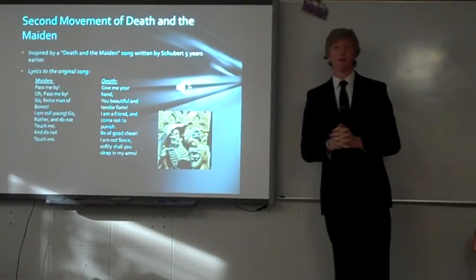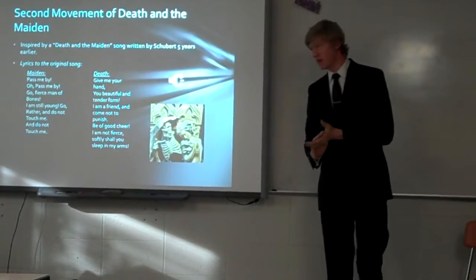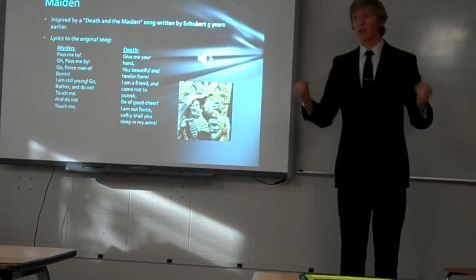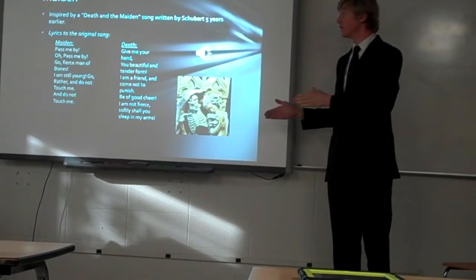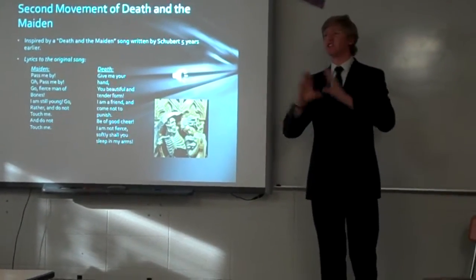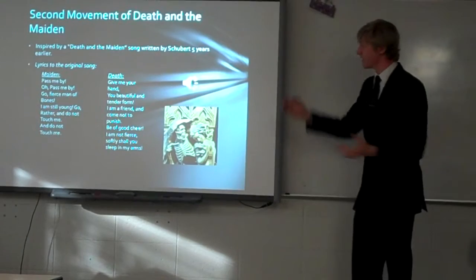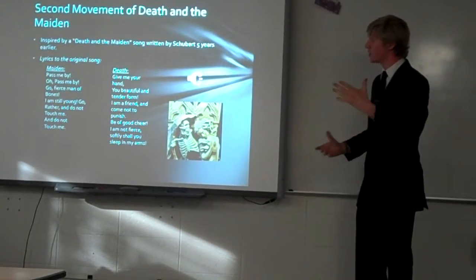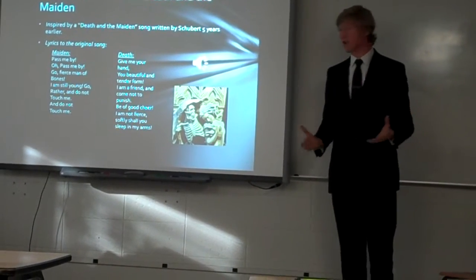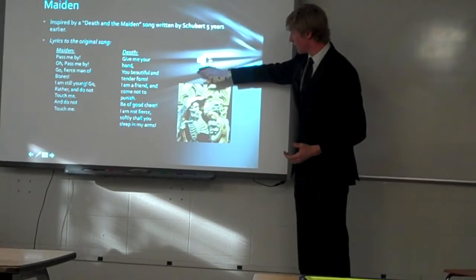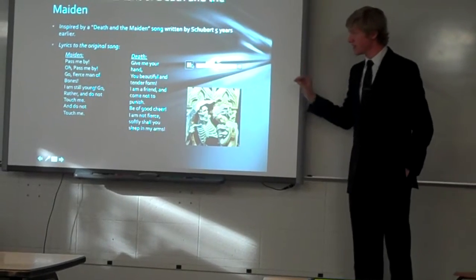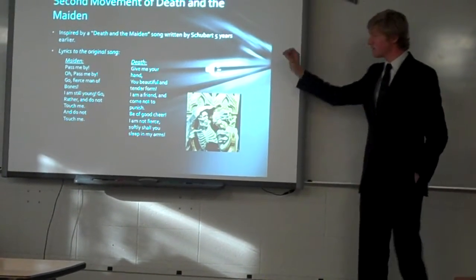The next music is the second movement of Death and the Maiden, occurring 37 pages later. But first, Death and the Maiden the quartet was inspired by a song written by Schubert five years earlier. This song talks about a maiden who's begging Death to pass her by because she's too young and innocent and has a whole life to live. Then Death says, 'Give me your hand, you beautiful and tender form. I am a friend and come not to punish.' And he promises she'll sleep softly in his arms.